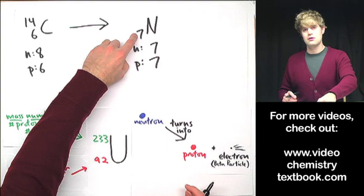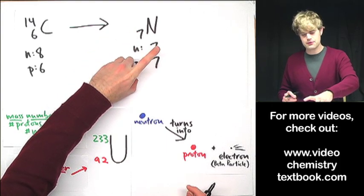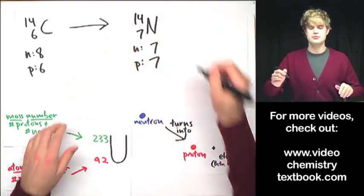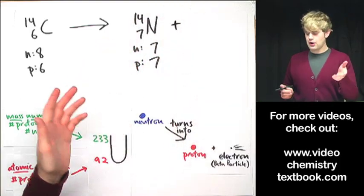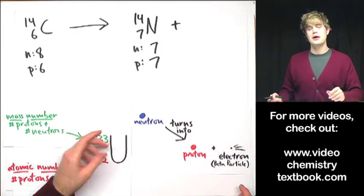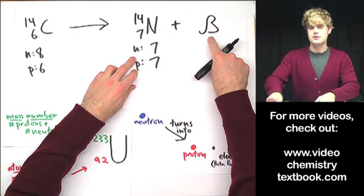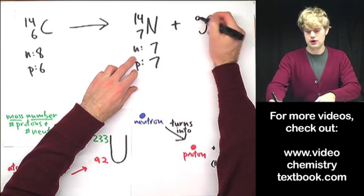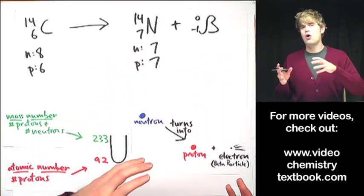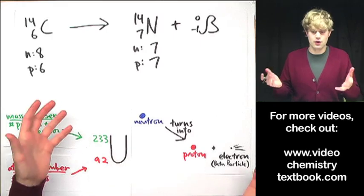Now, number of protons, I use that as my atomic number. That number goes there. And then I add up the number of protons and neutrons, and I get 14, and there's my mass number. Now I don't want to forget about the electron that shoots out, the beta particle. There are two different ways to write the beta particle. One of them is like this: a Greek letter beta, and you write zero there and then negative one.